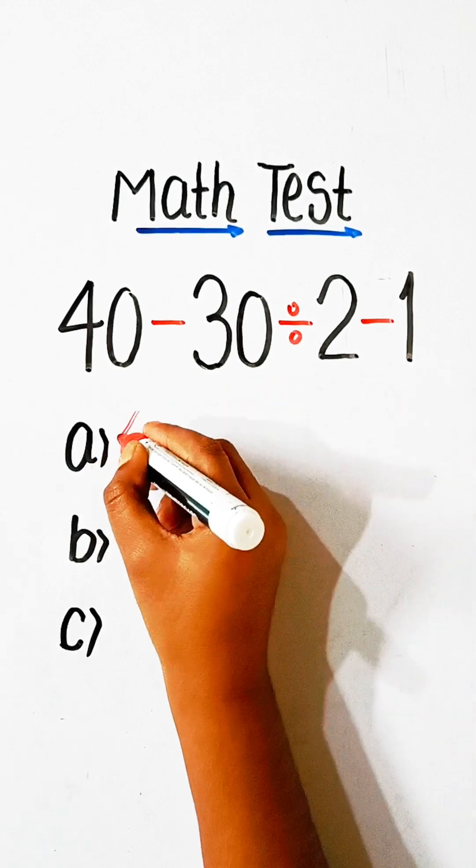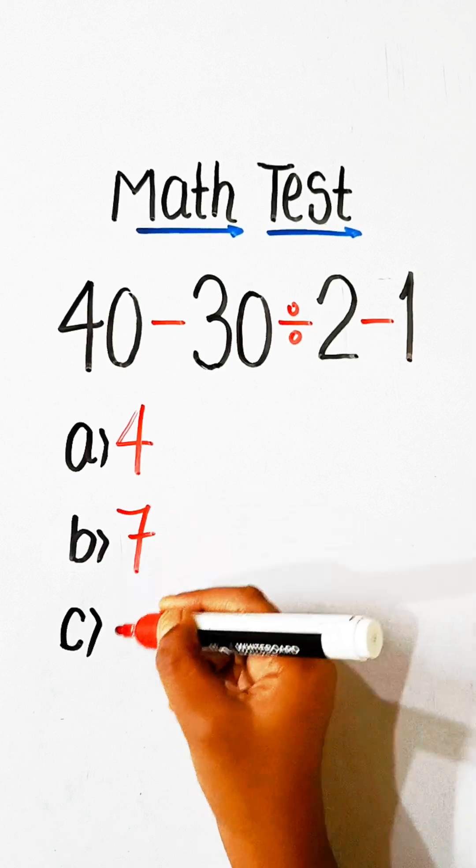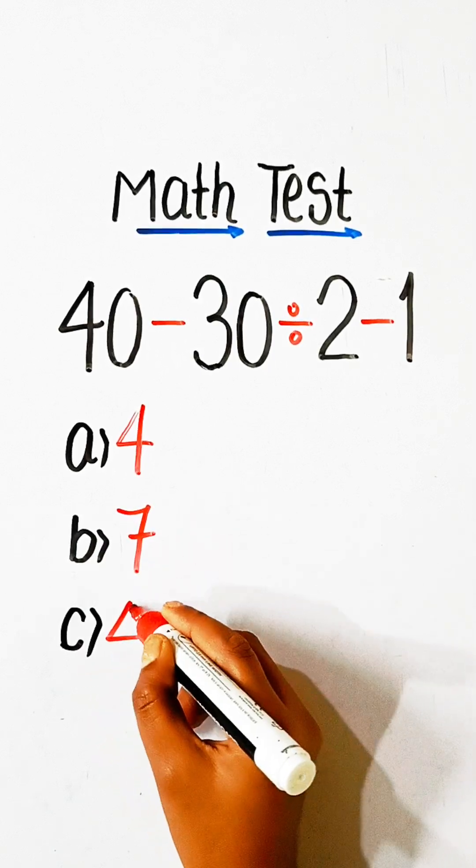Option A is 4, Option B is 7, Option C is 4 factorial.